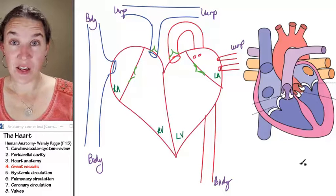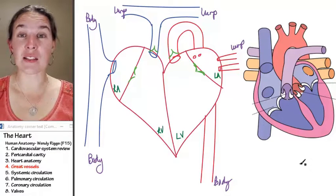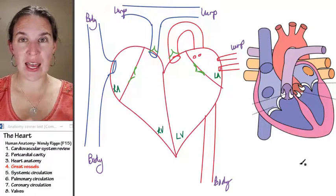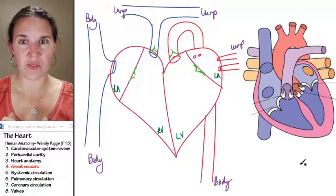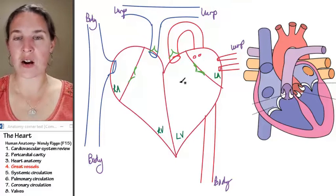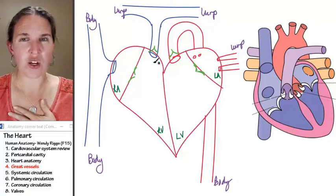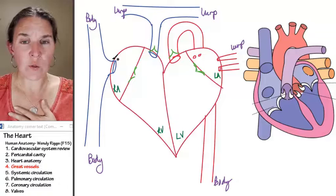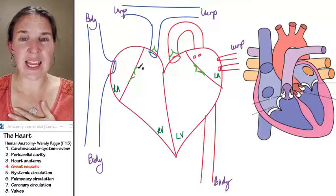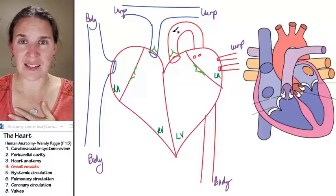So the great vessels are blood vessels that enter and exit the heart itself. Now, if you look at our diagram here, I've only drawn the great vessels. I've only drawn vessels that directly enter or exit the heart.